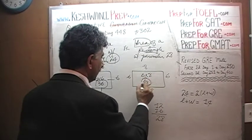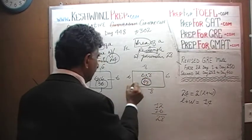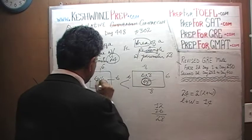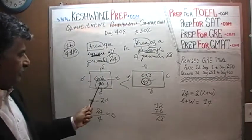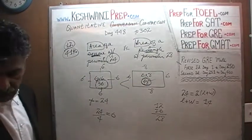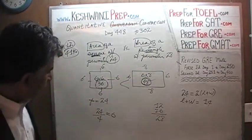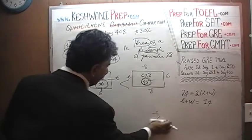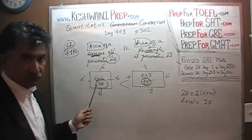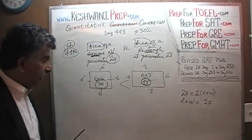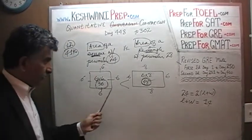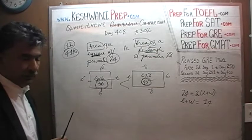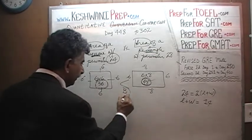The area of this rectangle is 6 times 8, which is 48. And of course 48 is larger than 36. The answer in this scenario is B.